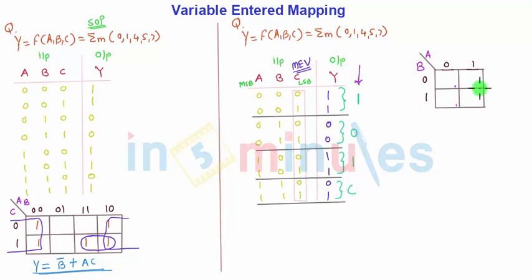For A B, the output positions are 0, 1, 2, 3. For position 0, that is A B = 0 0, the output is 1. So I will put 1 here. Then at position 1, the output is 0. Position 2 output is again 1, and position 3 output is C. So here is the special case that C is mapped into the K-map.